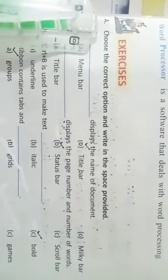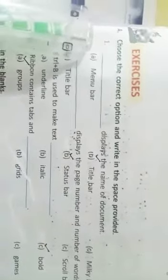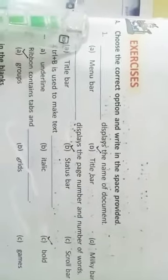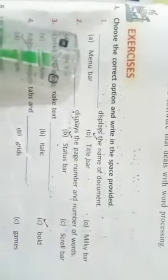Question A: Choose the correct option and write in the space provided. Number 1: dash displays the name of the document. Menu bar, title bar, milky bar. In title bar, the name of the document is displayed.